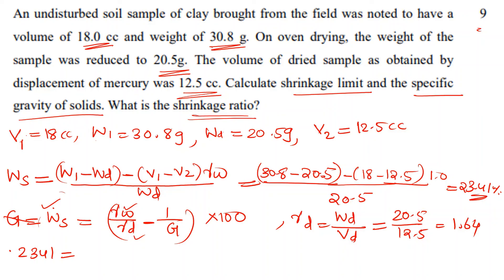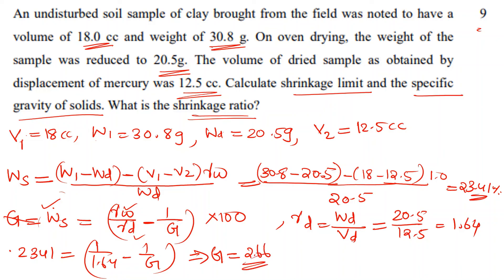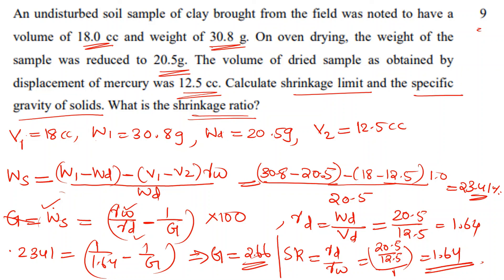Substituting: 0.231 = (1/1.64 − 1/G). Solving gives G ≈ 2.66. This is the specific gravity of the soil solids. You can apply this same equation for similar problems.